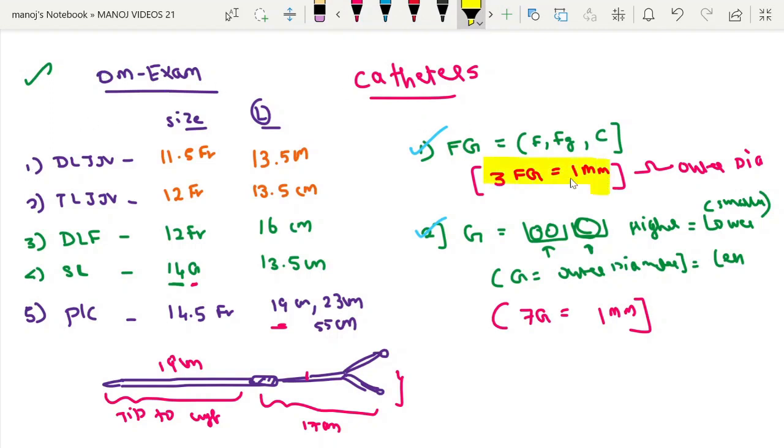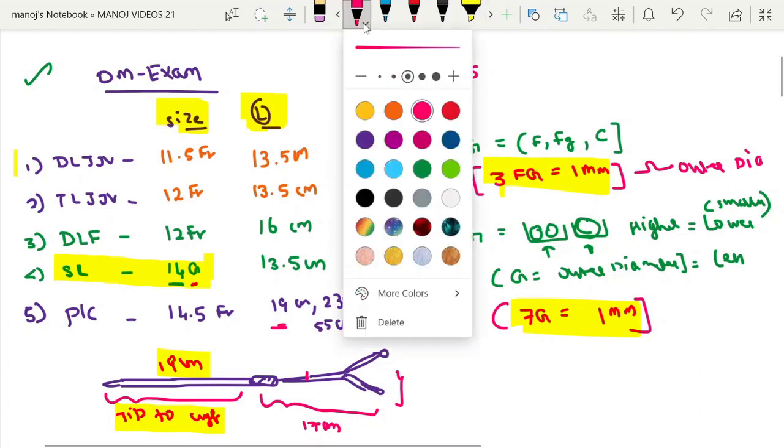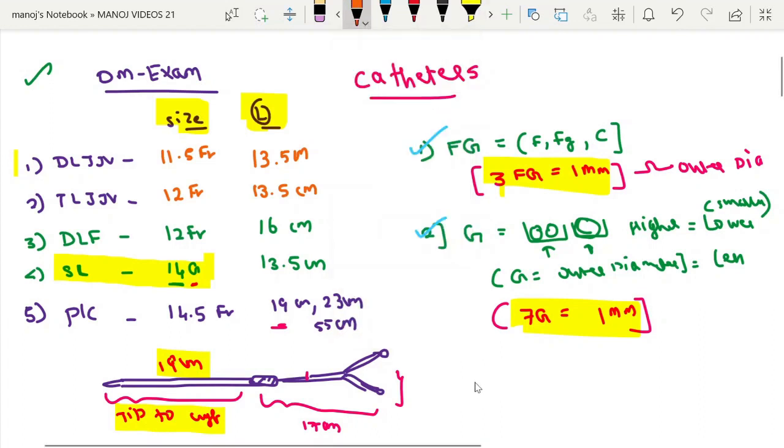Summary is: 3 French is equal to 1 mm, 7 gauge is equal to 1 mm. The IJV catheters and the straight catheters, size is mentioned over here, length is over here. Except that single lumen catheter which is being mentioned in gauge term, rest are being measured in French gauge only. For perm cath, 3 lengths are available: 19 cm, 23 cm and 55 cm. That is the tip to cuff. So this is the summary of the catheters.